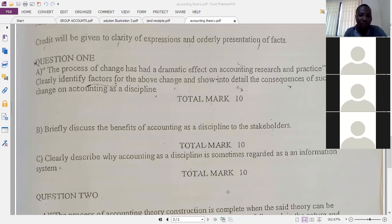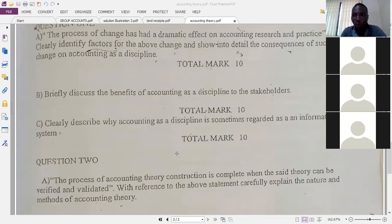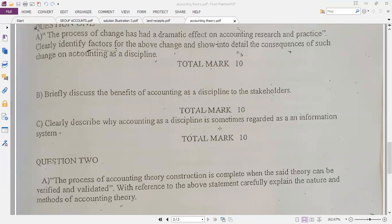Accounting also serves as a basis for decision making. So once there is accounting, it helps people or it helps stakeholders in their decision making. If you are an investor, based on the accounting information, you know that the company is a good company. It's a company that is viable. When I pump in my money, I can make something. You know that, oh, the company is not doing well, so I don't need to pump in my money. That is basically what accounting brings to the table.